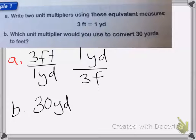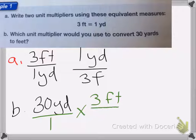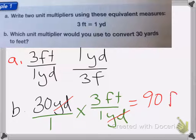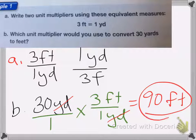So I end up doing 30 yards over 1, and I'm going to multiply it by 3 feet over 1 yard. This way the yards on the top and bottom will cancel. I end up with 30 over 1 times 3 feet. 30 times 3 is 90, and my label is feet. So I'm left with 90 feet.